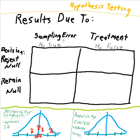Hi, you had a question about type 1 and type 2 error, so I put some material up here on my whiteboard to help answer that question. Your question falls under the topic heading of hypothesis testing, and type 1 and type 2 error fall into what's called a decision matrix.